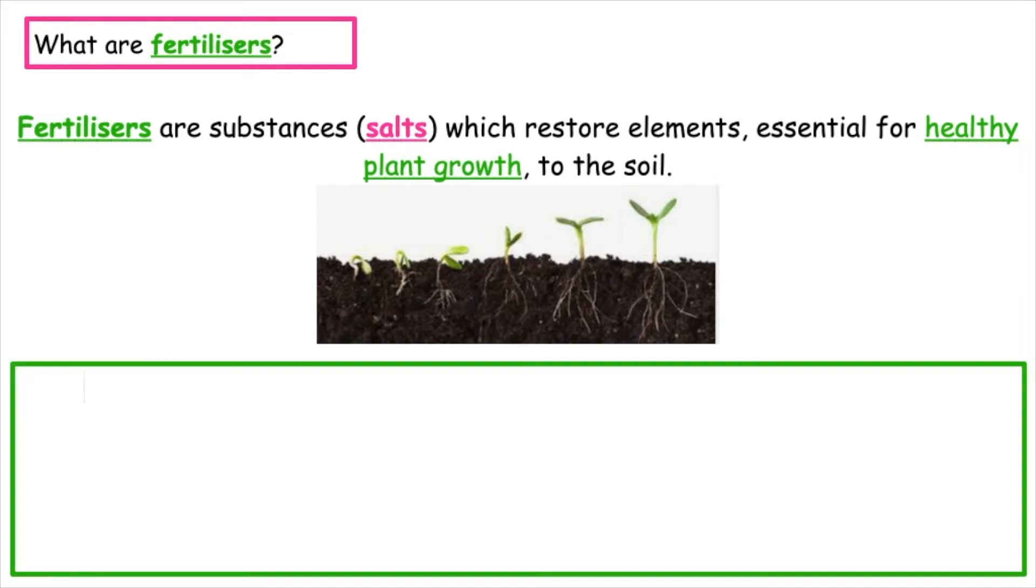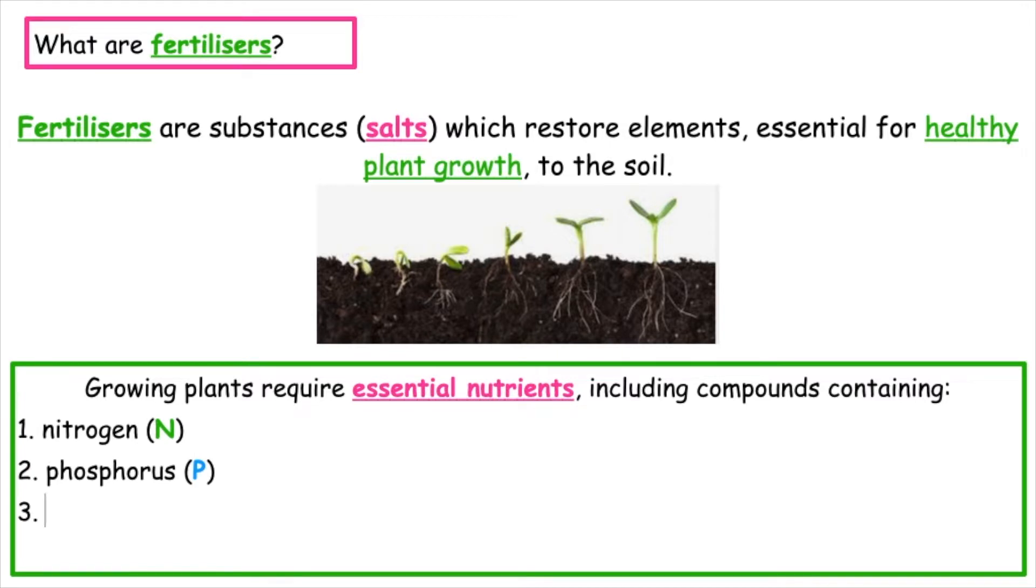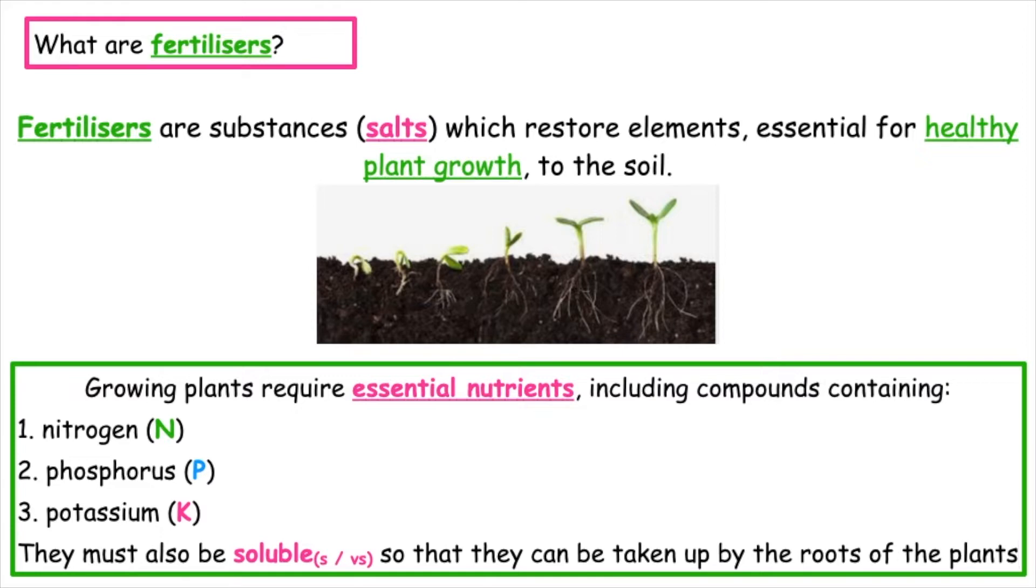Growing plants require essential nutrients, including compounds which contain the elements nitrogen, phosphorus and potassium, NPK. They must also be soluble so that they can be taken up by the roots of the plants.